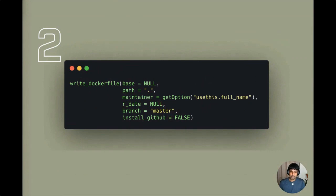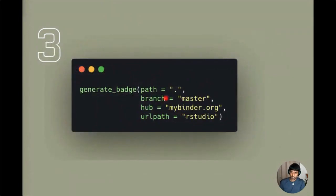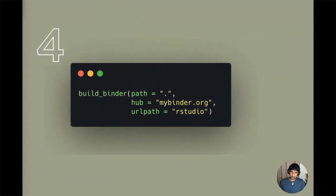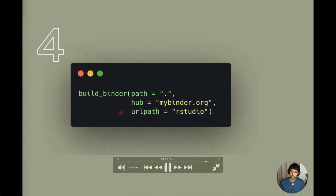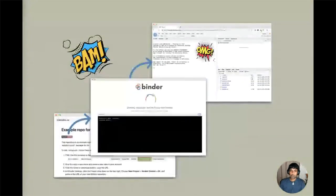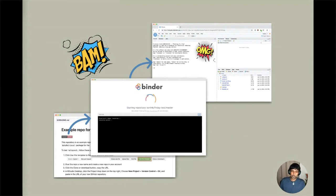The last step is to generate a badge — the hub option defaults to My Binder, which is one instance of Binder, but you can swap it for any publicly available Binder hub. The final optional step is to build the Binder, though clicking the badge also triggers this. Those are the steps to go from a collection of R code on GitHub to a live executable notebook anyone can run. It's great for showcasing small examples from your paper, code examples for teaching, and use cases and tutorials.